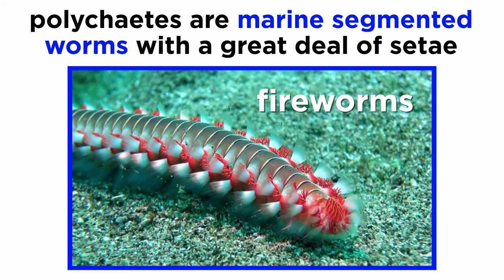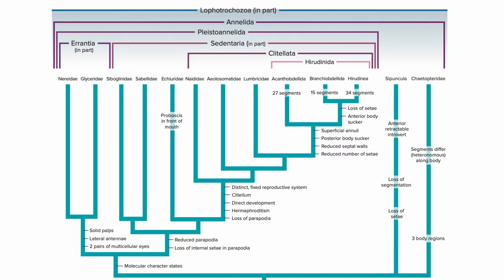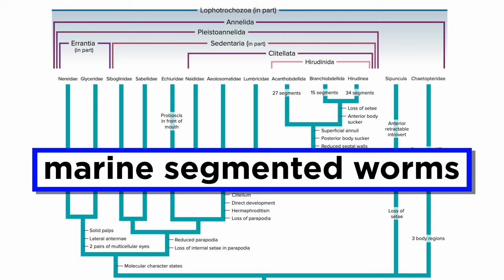It is primarily used to refer to marine segmented worms with a great deal of setae, like the fireworms. We will use this term when appropriate, but we will typically use the more descriptive term, marine segmented worms, to refer to the majority of the annelids outside of clade Clitellata.